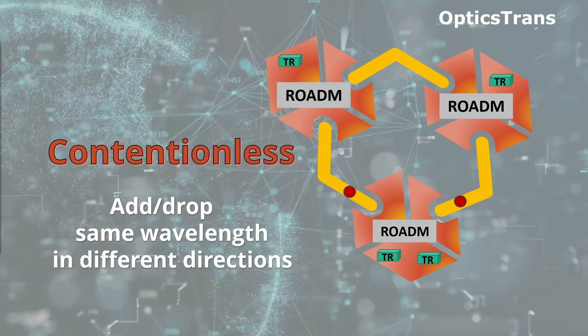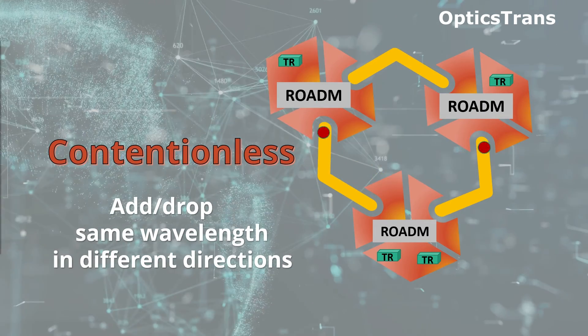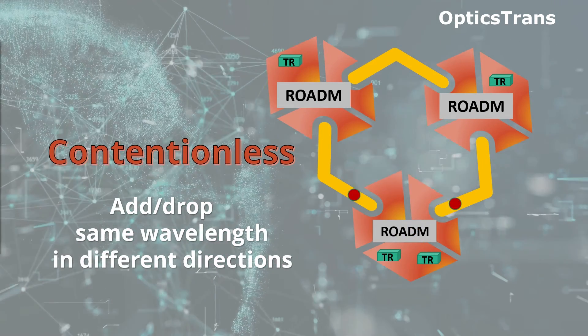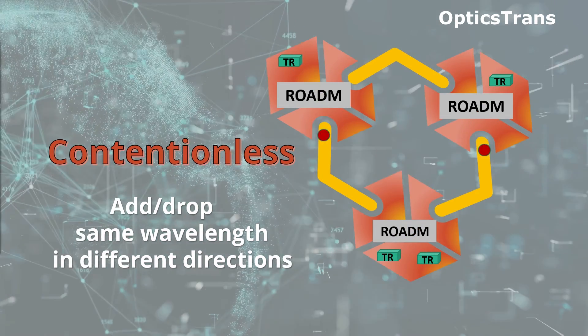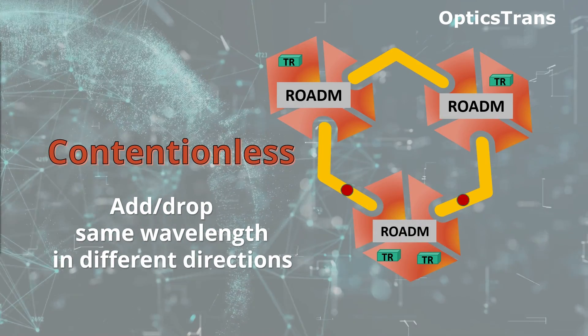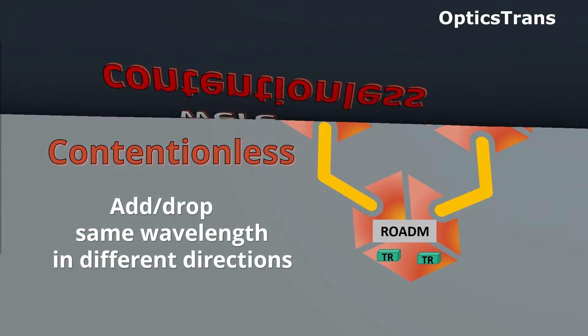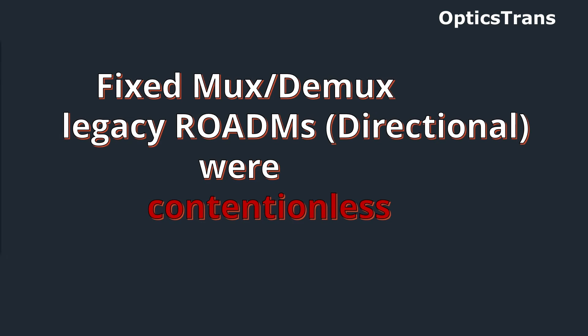A ROADM site is contentionless if it is possible to simultaneously add and drop the same wavelength in different directions. This might come as a bit of surprise, but fixed mux demux legacy ROADMs in directional configuration were contentionless.